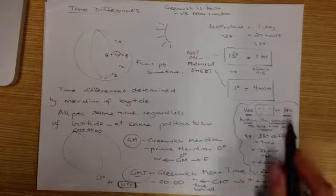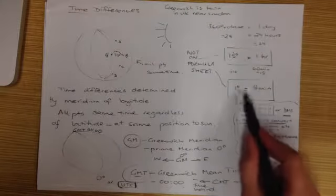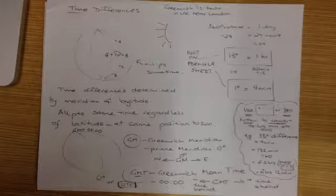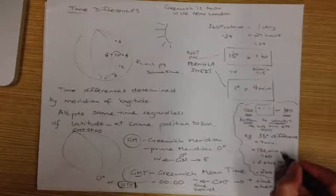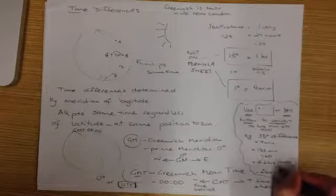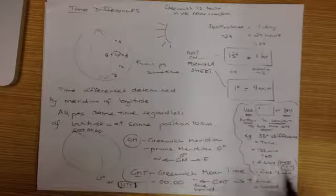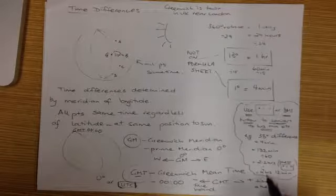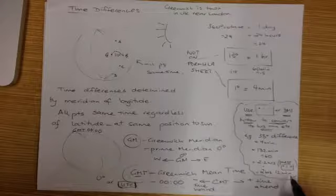then we're going to multiply that every 1 degree is 4 minutes, we're going to multiply that by 4, gives us 132 minutes. When I divide it by 60 to get into hours I get 2.2, so I press my bubble button which will give me 2 hours and 12 minutes.